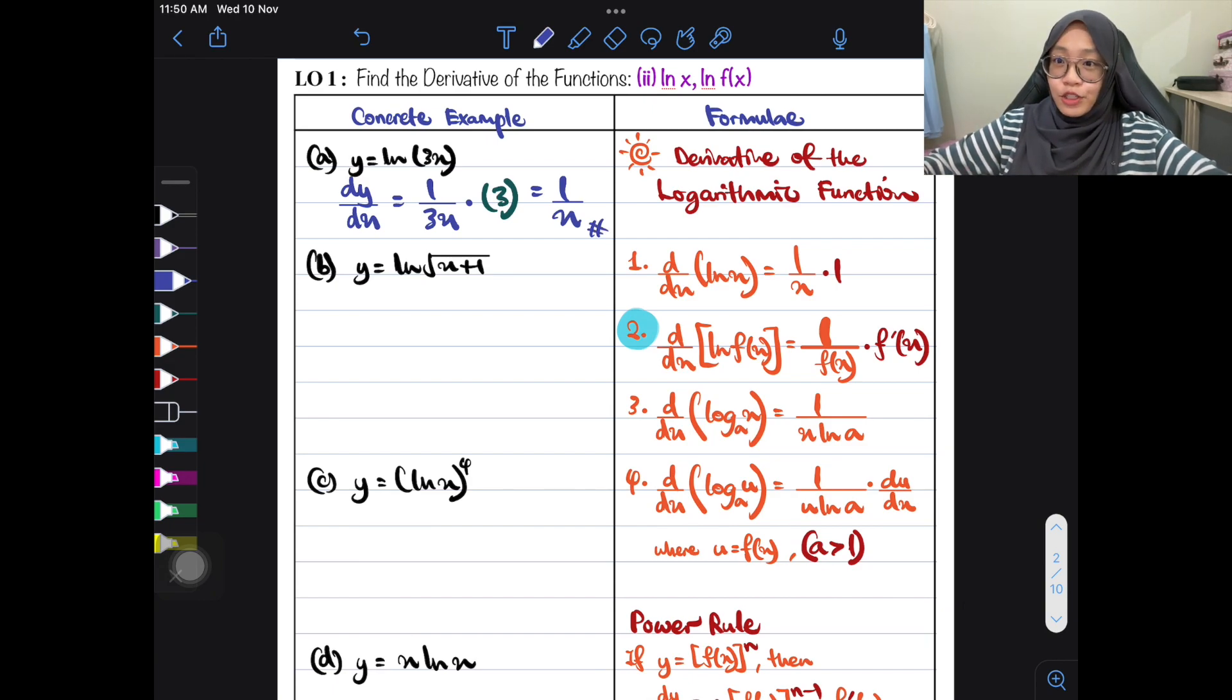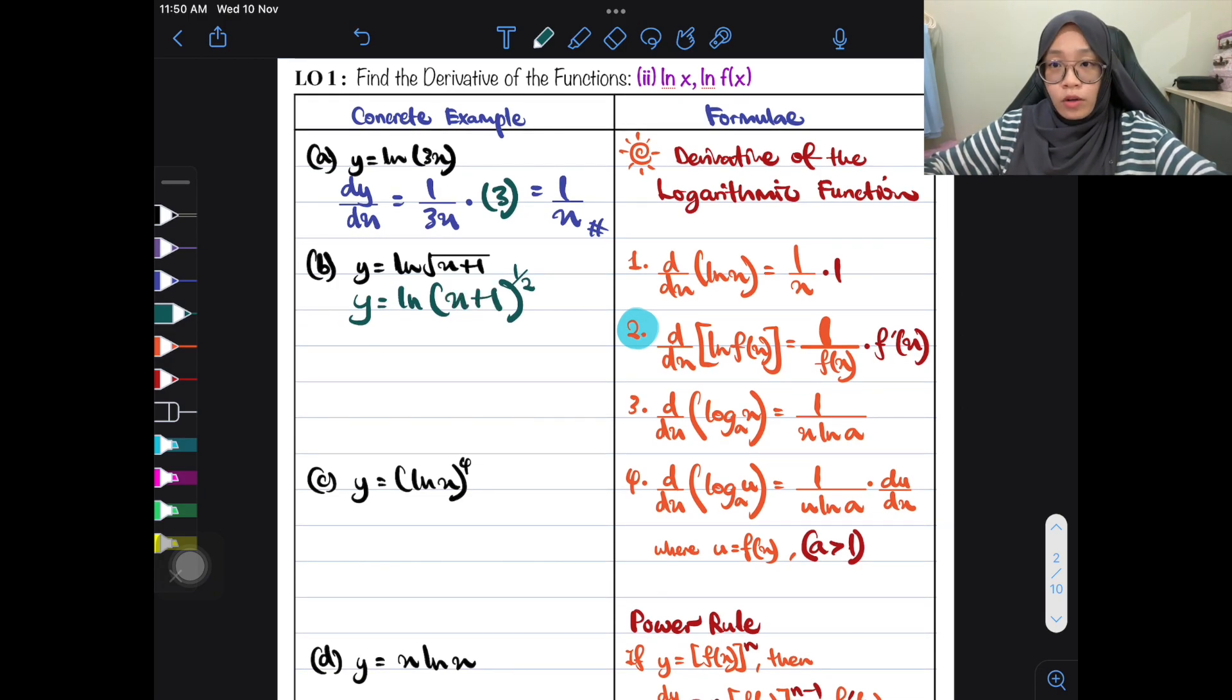You solve it and you will get your answer is just 1 over x. Easy. That's the most basic. Differentiate the logarithmic function. Let's go to the second example. So before you nak cepat-cepat tulis dy by dx, you kena ingat you ada square root. Square root tak senang-senang nak kita terus solve. We have to do something about this square root first. We gotta change it into something to the power of 1 over 2.